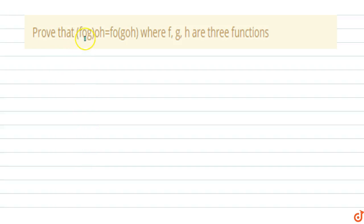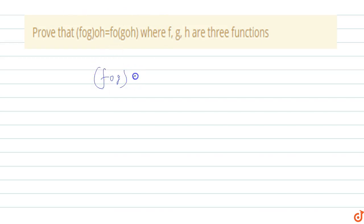In this question, prove that f of g of h equals f of g of h — that is, prove that function composition is associative, where f, g, h are three functions. So we have to prove that f∘(g∘h) equals (f∘g)∘h.